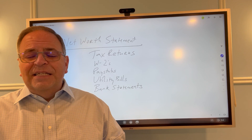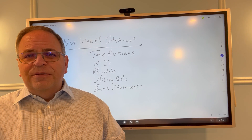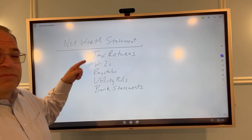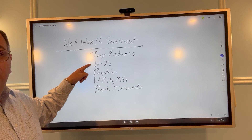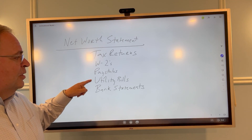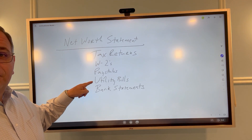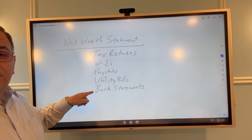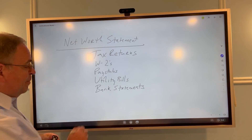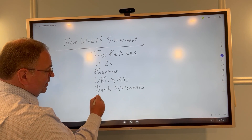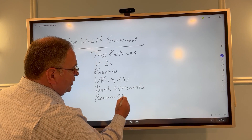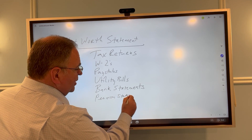As part of your net worth statement, there are certain documents that need to be included: tax returns, your W-2s, your pay stubs, utility bills, bank statements, pension statements, and retirement information.